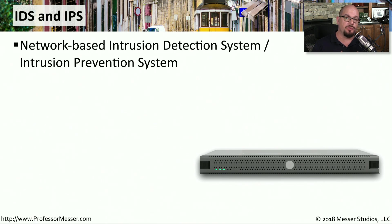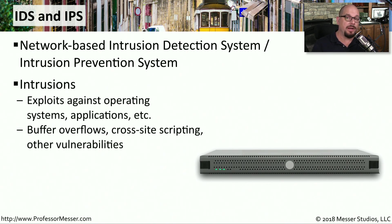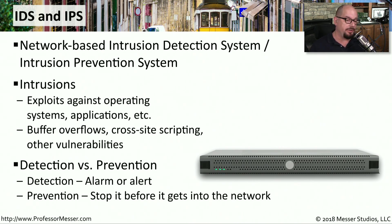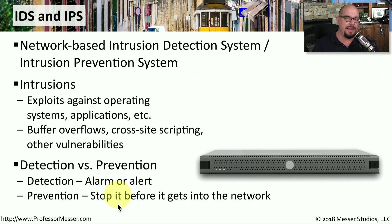Network administrators use either an IDS or an IPS — an Intrusion Detection System or Intrusion Prevention System — to watch for intrusions on their network. These intrusions could include exploiting OS vulnerabilities, performing a buffer overflow, or attacking a database with a database injection. If you're using an IDS, you can see that an exploit was attempted and generate an alarm or alert. If you're using an IPS, you have the additional capability of blocking that event from occurring — for example, stopping a database injection before it ever reaches the database server.